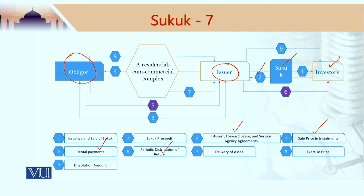The installments go from the issuer to the obligor, rental payments and periodic distribution of returns go to the investor, and then we have the phase of delivery of asset. The obligor has completed the construction or manufacturing, and that asset is then delivered to the issuer. The issuer would then sell it in the market or to a subsidiary of the obligor and receive the price. That price would be used to pay back the invested money to the sukuk holders.